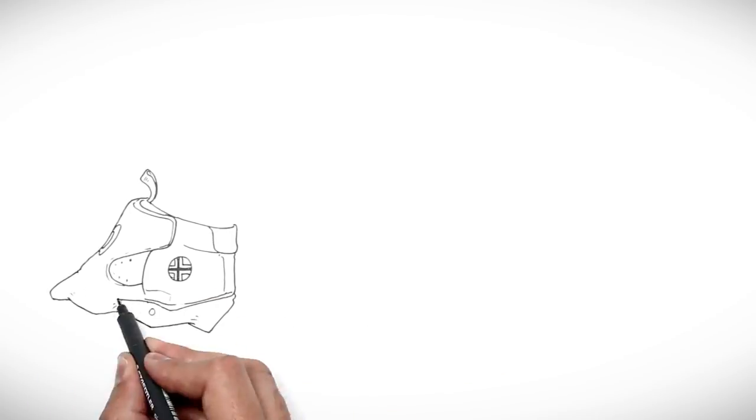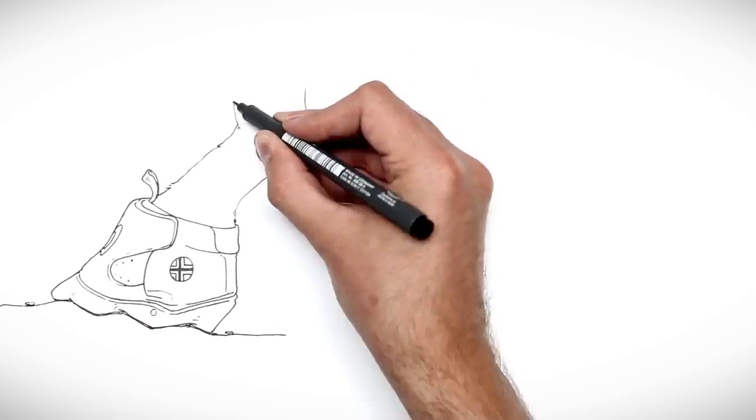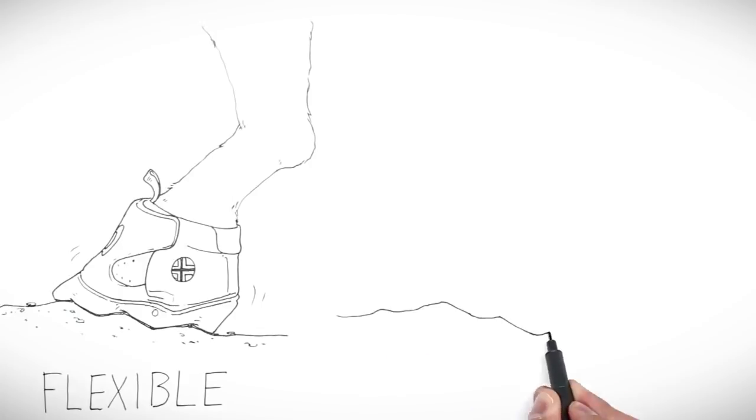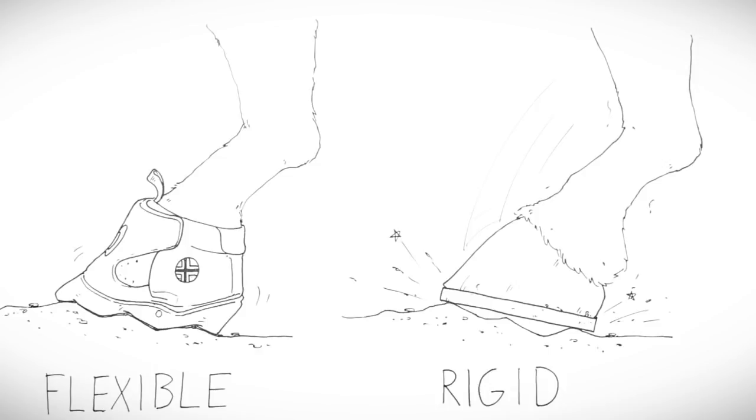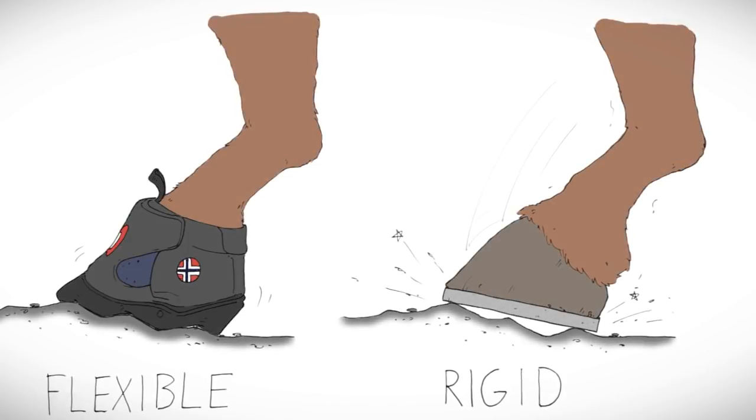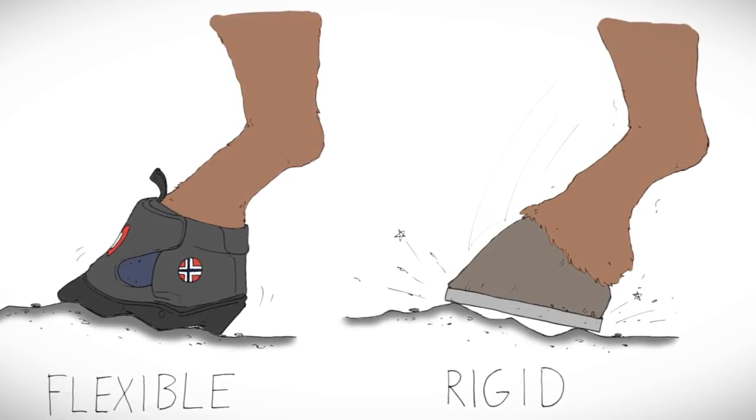The jogging shoe is designed to work with the hoof to support its natural function through the flexible sole. This flexibility is the biggest difference between the jogging shoe and a non-flexible shoe. It makes it possible for the natural hoof mechanism to take place.